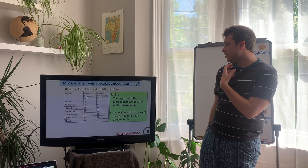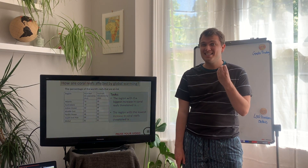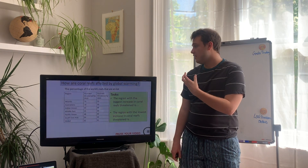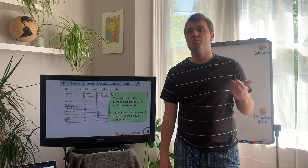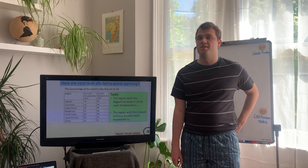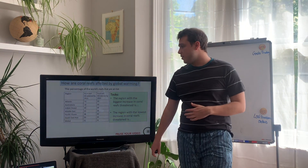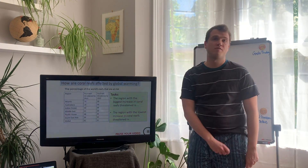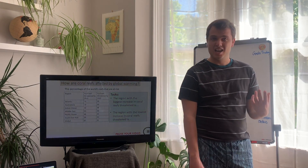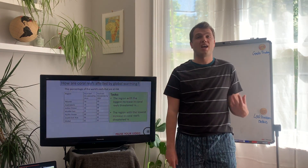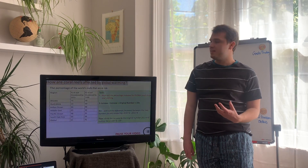The area with the biggest increase in threat to coral reefs is Australasia, with a massive increase - 76% of these reefs are going to be at risk by 2030. A lot of this will be the Great Barrier Reef, which is going to be hugely affected. The region with the lowest increase is Southeast Asia, which has only a 5% increase - mainly because they already had such a huge amount threatened. It doesn't mean they're any less at risk; a lot of their coral reefs have already been destroyed.